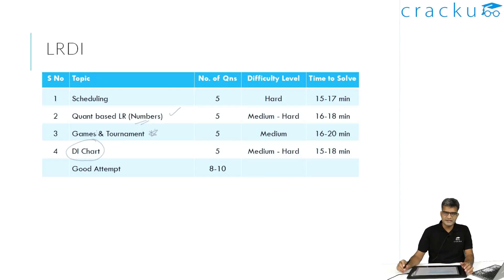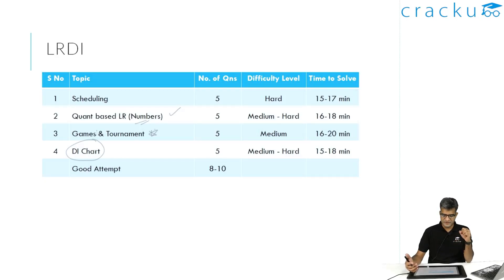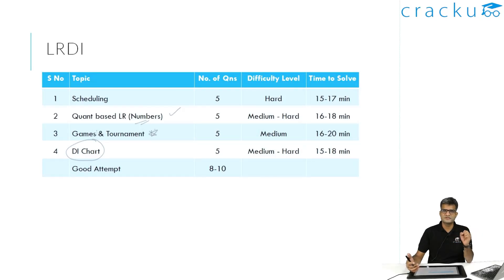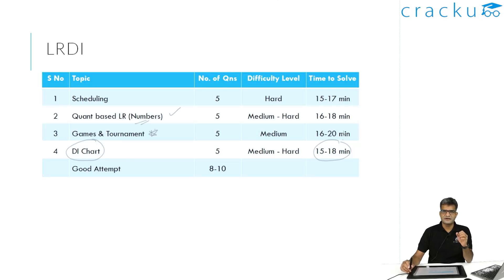I first selected the DI chart set because I thought it would be the easiest — it is a DI set, so even if slightly time-consuming, I thought I would definitely get all questions correct. However, this took me a lot more time than wanted — I took around 25 minutes. A good student, if they don't miss important clues, should be able to solve it in around 15 to 18 minutes, maybe 20 minutes. I made one big error which cost me extra time, but without such mistakes, this set can be solved in around 20 minutes.